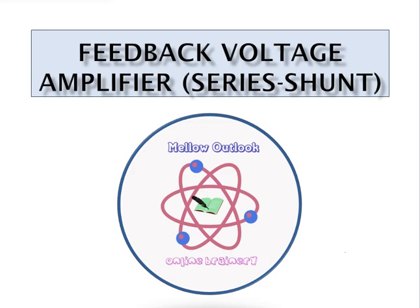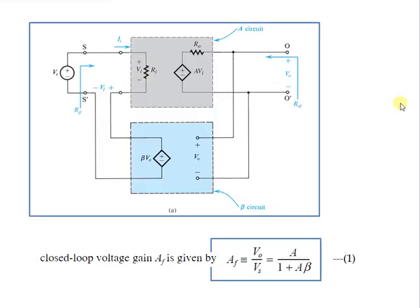Welcome to the tutorial on feedback voltage amplifier, also called series shunt feedback. The series shunt feedback consists of a unilateral open loop amplifier denoted as the A circuit, and an ideal voltage sampling and voltage mixing feedback network denoted as the B circuit.